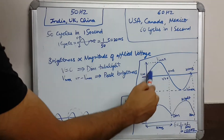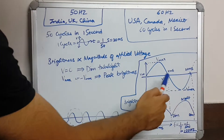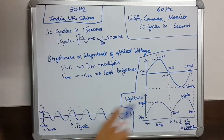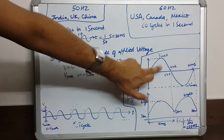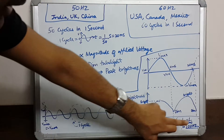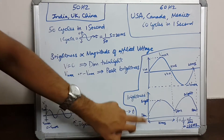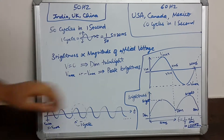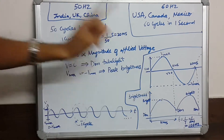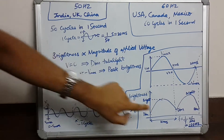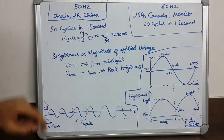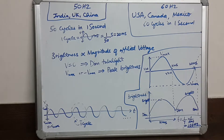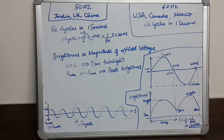In one second we have 50 cycles of voltage, and one cycle of voltage has two cycles of brightness, so in one second we would have 100 cycles of brightness. The light goes from dim to bright 100 times in one second, so the light appears to flicker at a frequency twice the supply frequency of 50 Hz — that is, at 100 Hz. In America, Canada, and Mexico with a supply frequency of 60 Hz, it would appear to flicker at 120 Hz.